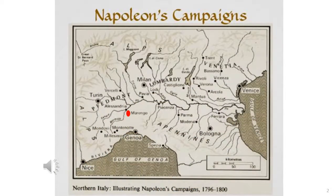On this map, we can see the location of Marengo, which is where the battle occurred. In simple terms, the Austrians were at Genoa when Napoleon drove down from Switzerland and blocked the Austrian line of communication with Vienna, basically encircling the Austrians. Marengo was the Austrians' attempt to break out of this encirclement.